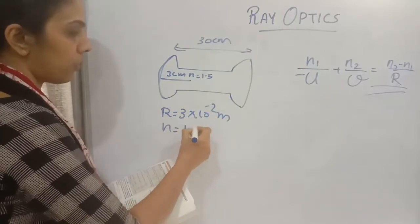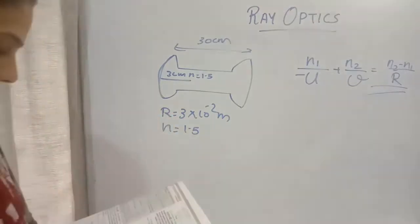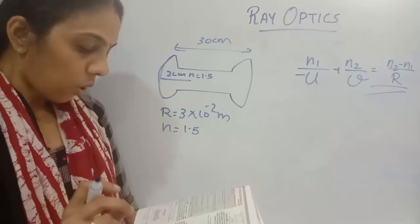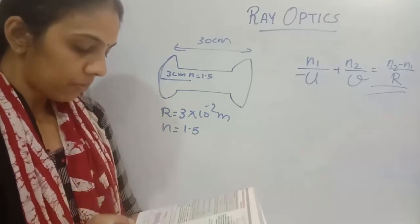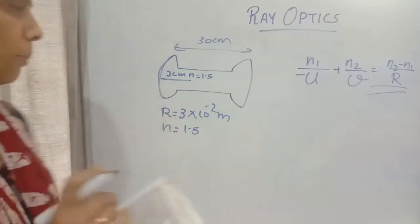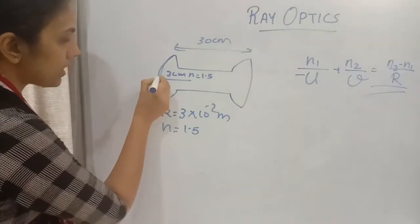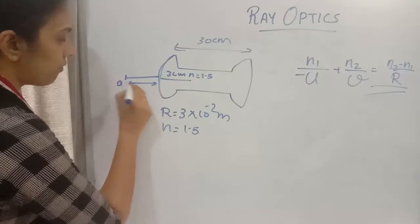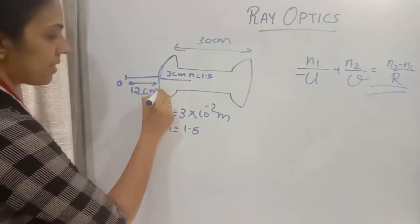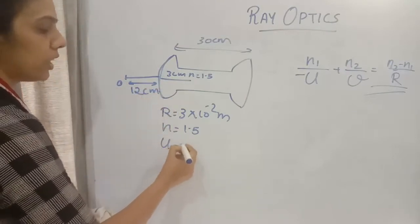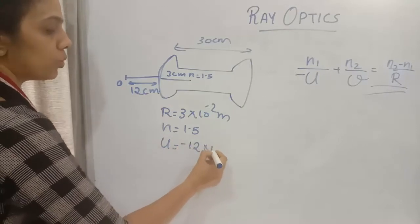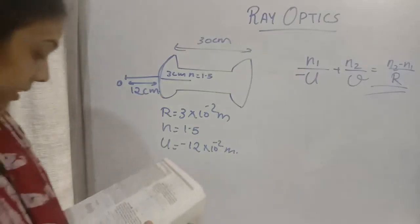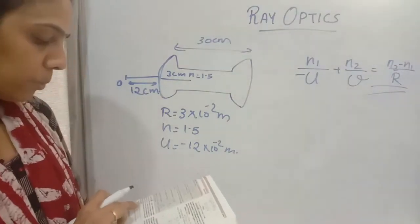The point object is kept at a distance of 12 centimeters from one end of the dumbbell. So u equals minus 12 centimeters, that is minus 12 into 10 to the power minus 2 meters. Now we need to find the position of the image formed due to refraction.